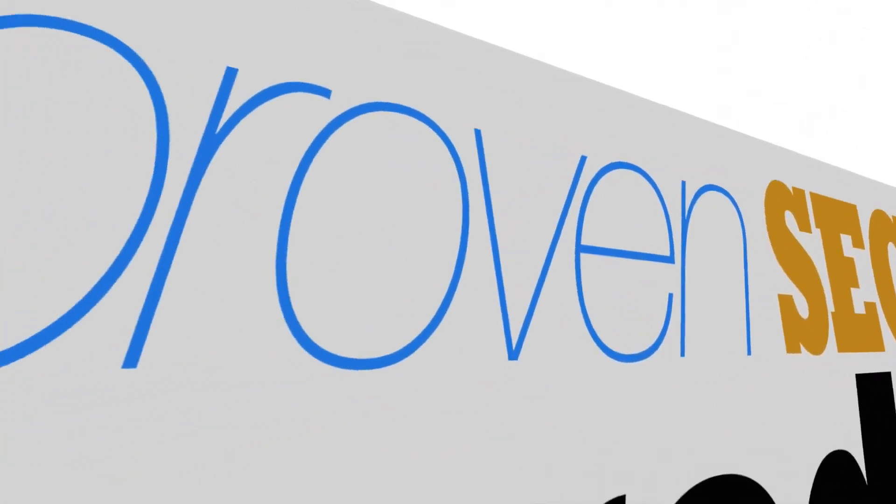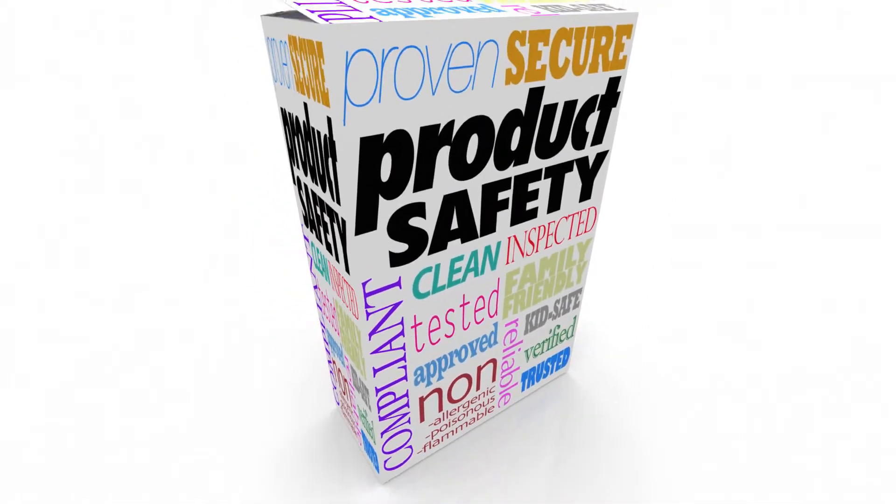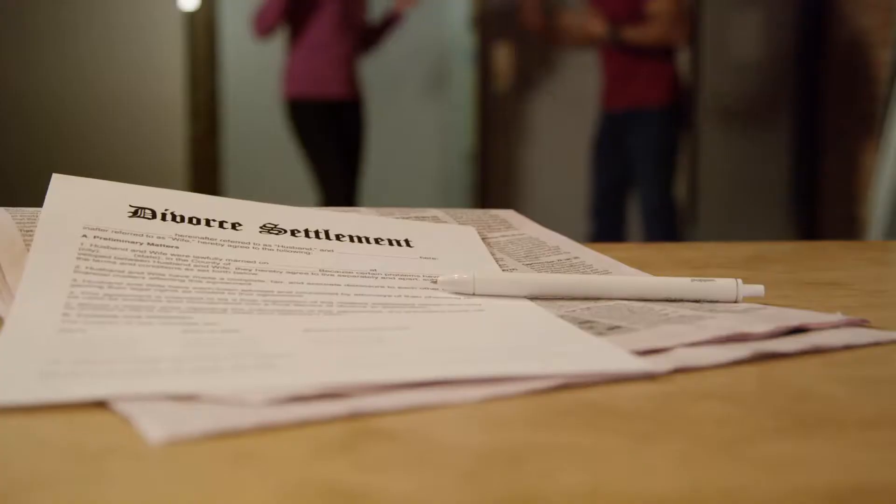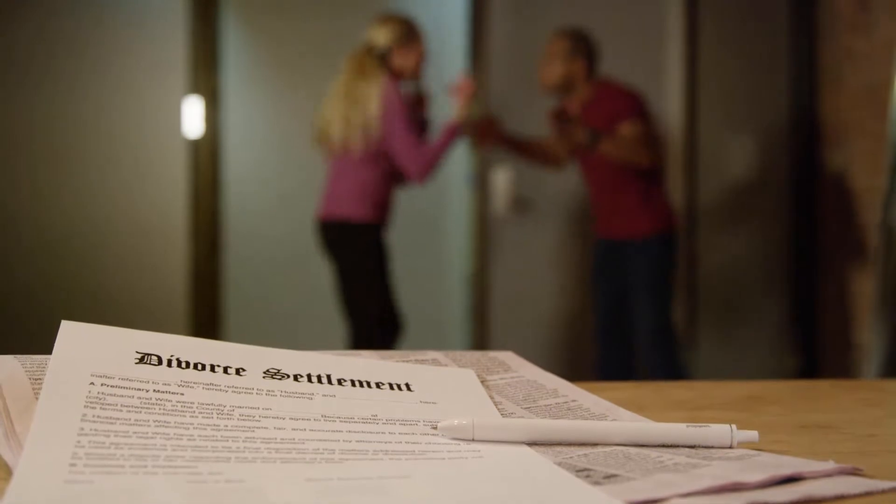Defendants are given significant protection under the law and cannot be thought of as culpable without a confession or a trial that proves guilt. The presumption of innocence must exist until the termination of a trial, even if it seems like the accused is guilty.